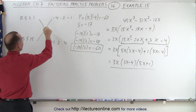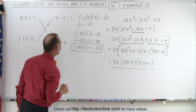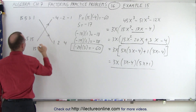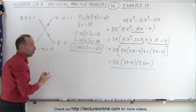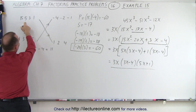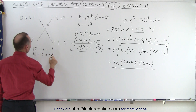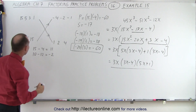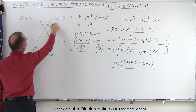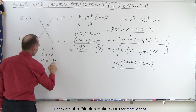Now let's see which combination gives us the correct middle term using the FOIL method. I multiply 15 times 1, giving me plus 15, and 1 times negative 4 giving me minus 4 — that's positive 11, which does not give me the negative 17. Next, 5 times 2 is 10, and 3 times negative 4 is negative 12 — that gives minus 2, again not right. Try 3 times 1, that gives me 3, and 5 times negative 4 gives me minus 20. That gives me negative 17 — and that is bingo, the right number.